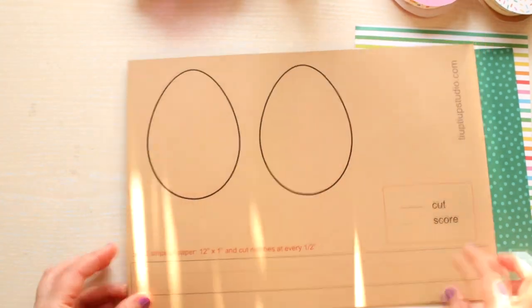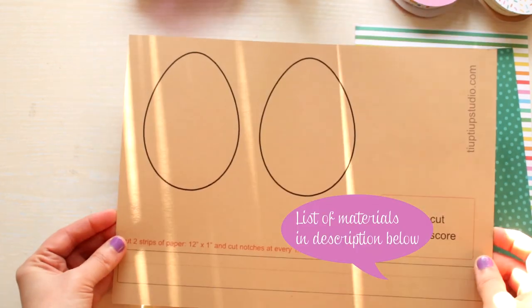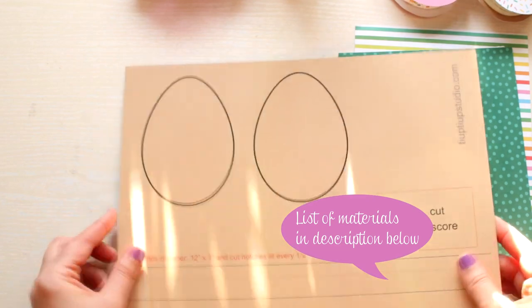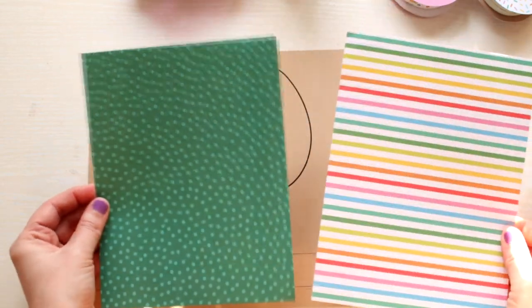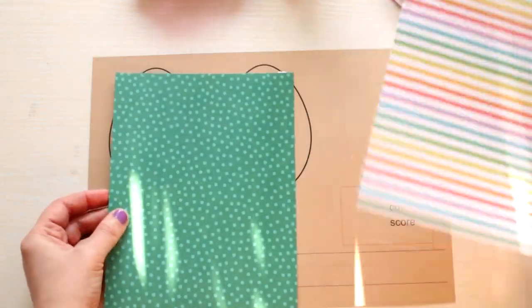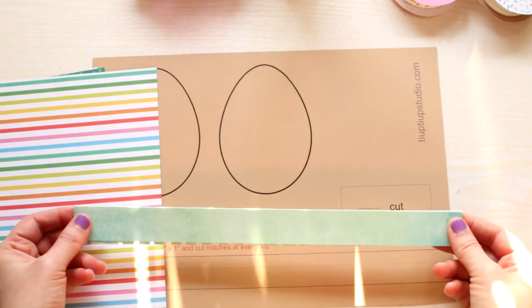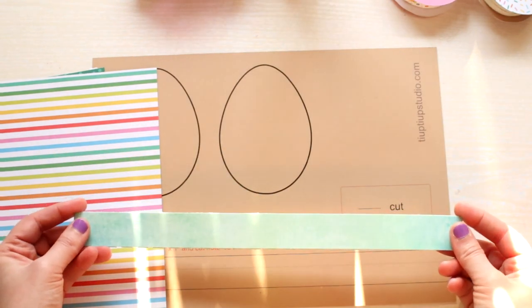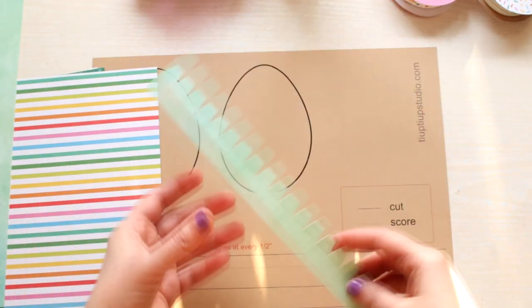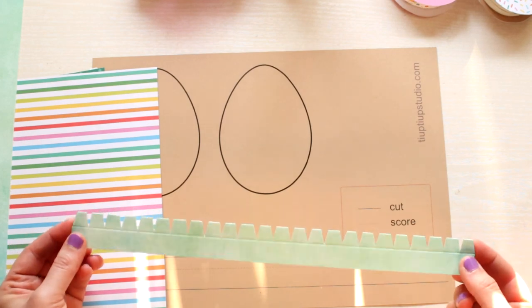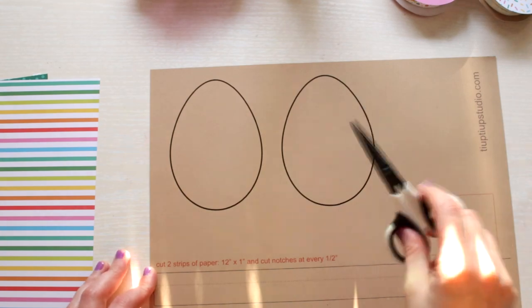After downloading the template you need to print it on some cardstock. Then you will need some patterned paper, a few strips of paper. They're 12 inches long by 1 inch wide. We will trim the strips to look something like this. I will show you exactly how. So let's do some cutting.